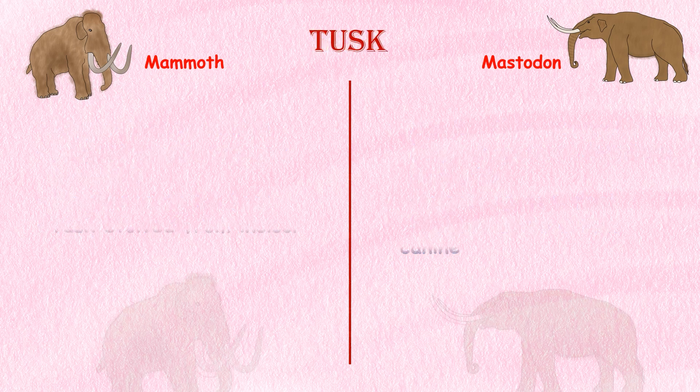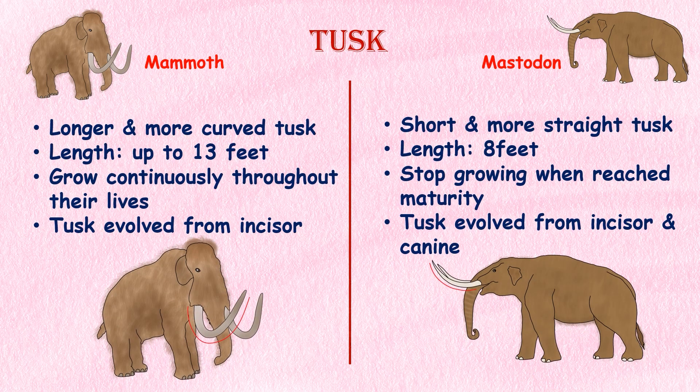Tusk. Mammoths had tusks that were longer and more curved than those of Mastodons. Mammoth tusks could reach up to 13 feet in length, while Mastodon tusks typically measured up to 8 feet. The tusks of mammoths grew continuously throughout their lives, while Mastodon tusks stopped growing once the animal reached maturity. Mammoth tusks evolved from the incisors of their ancestors, while Mastodon tusks evolved from a combination of incisors and canines.